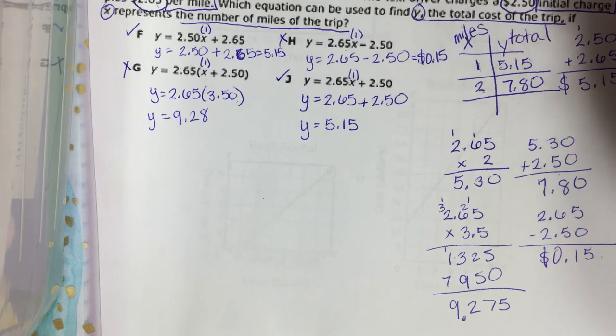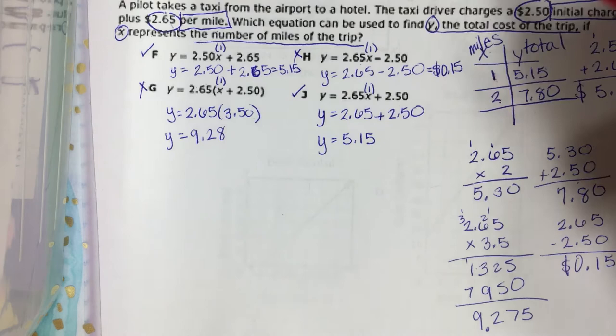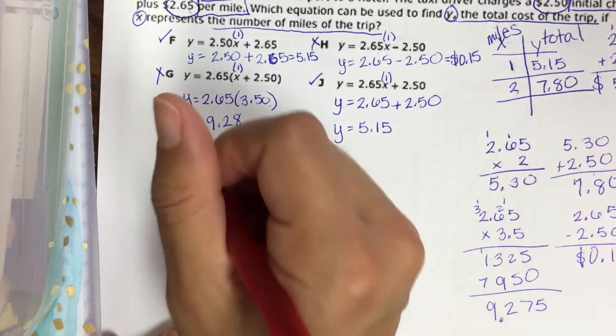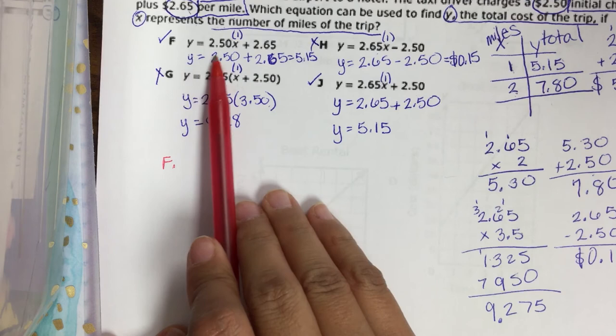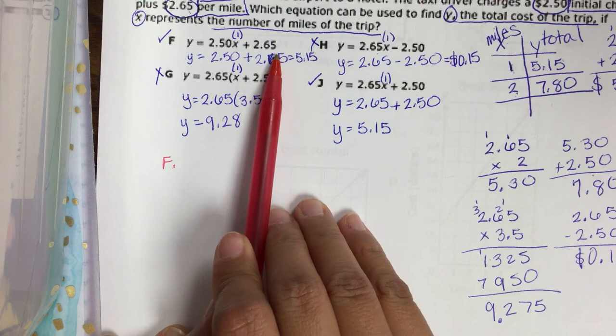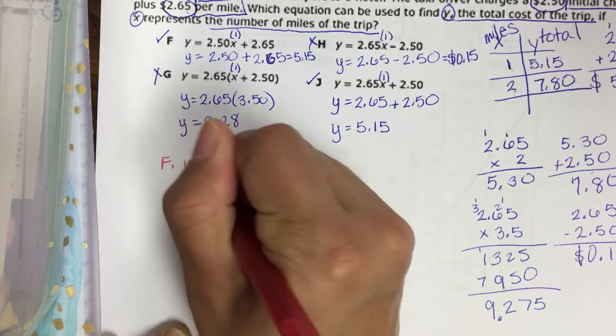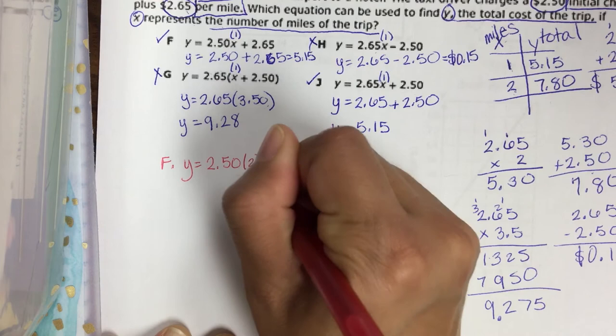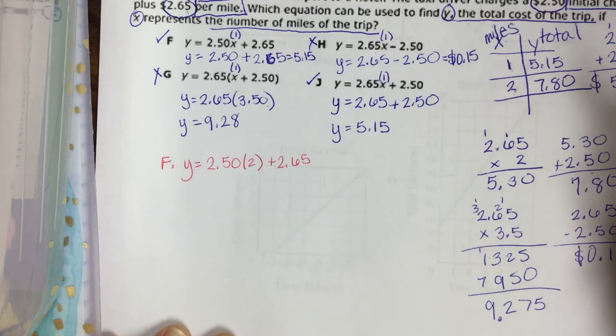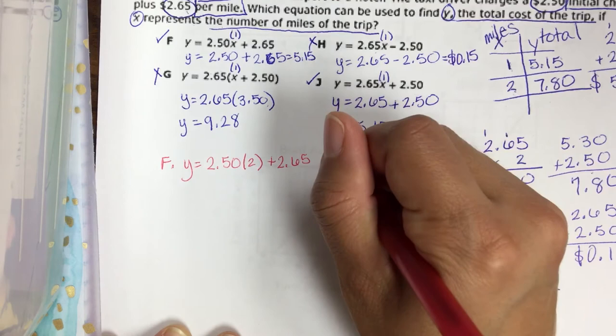And I've got all this extra space. I'm not crossing anything out, and I had already done the work to figure out two miles. So let's rewrite answer choice F. Remember that the equation Y equals $2.50 times X plus $2.65. I'm going to rewrite that equation with 2 for X instead. Y equals $2.50 times 2 plus $2.65. And I'm going to want $7.80 to come out there.